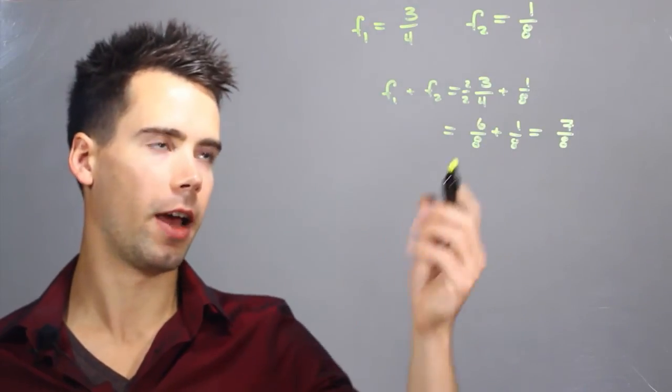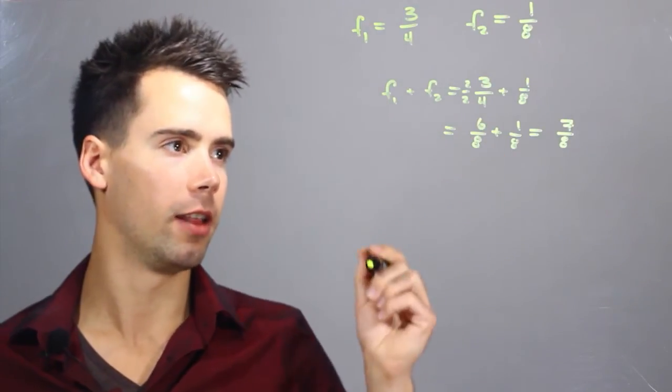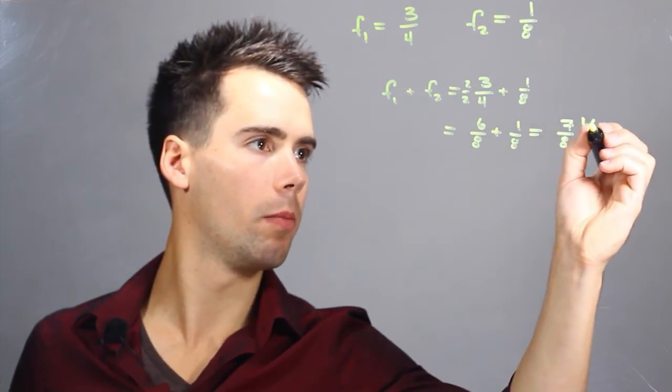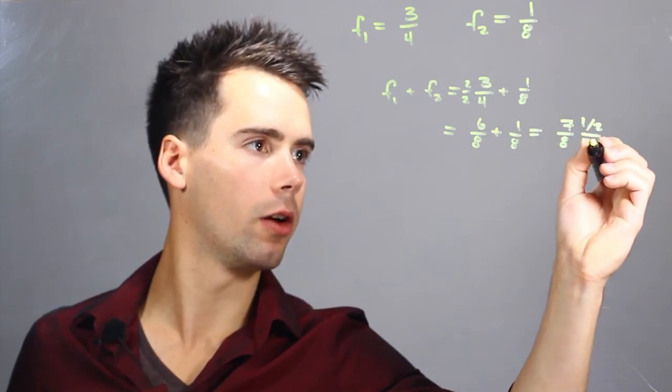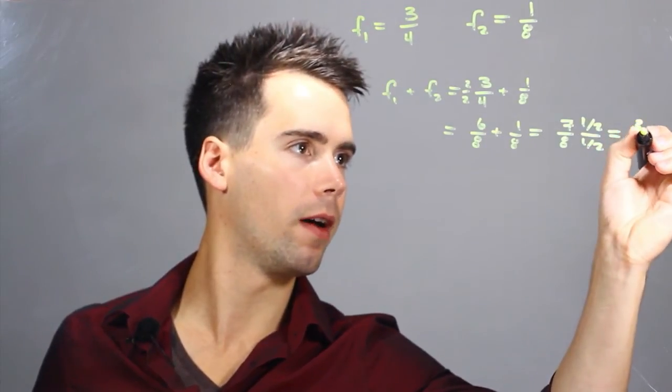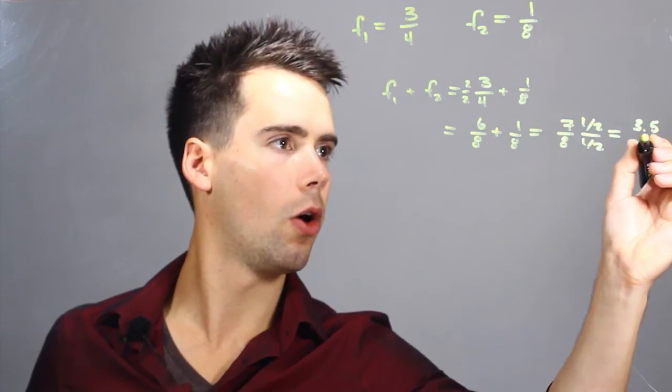Going back to our original proof, I postulated that it would be greater than 3 over 4. So we can reduce this by multiplying the numerator and denominator by one half and we find that it's equal to 3.5 over 4.